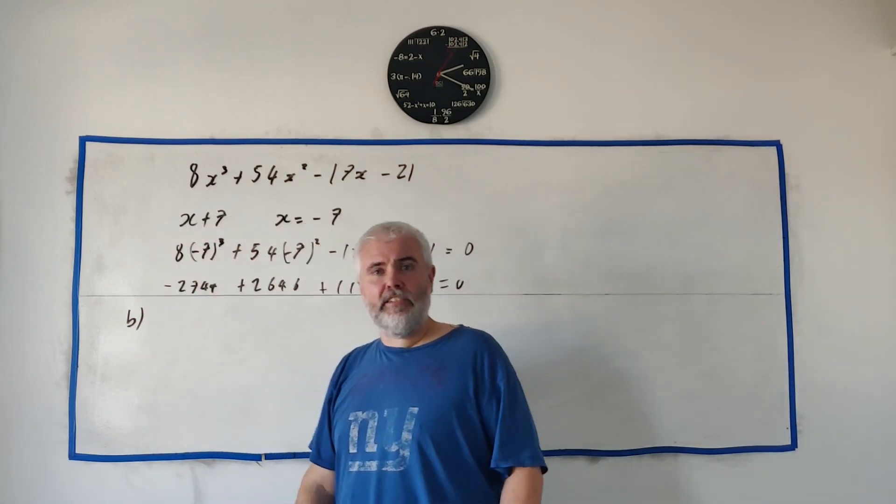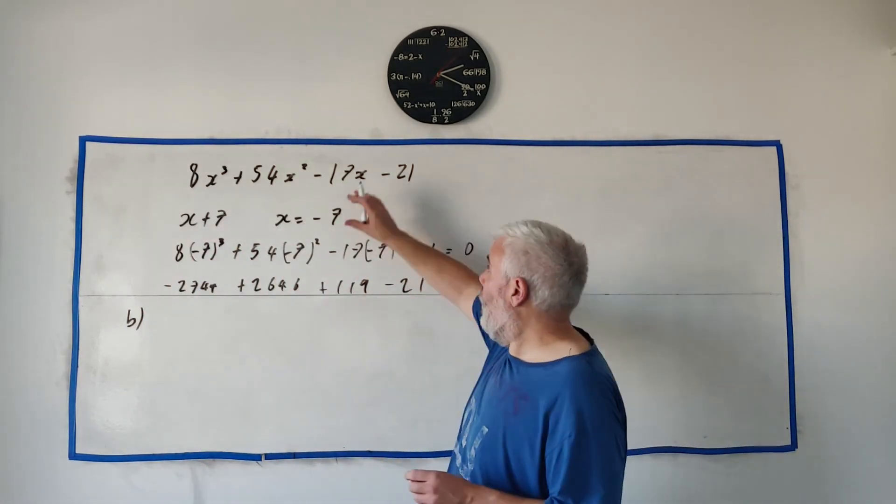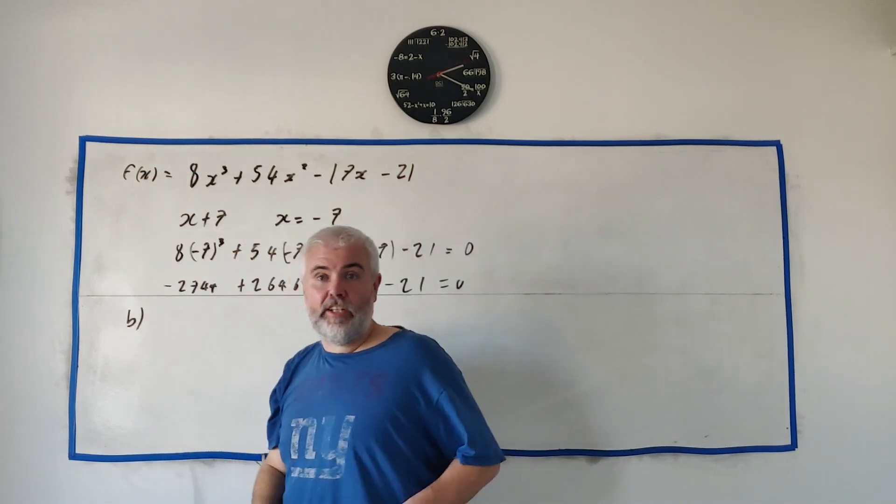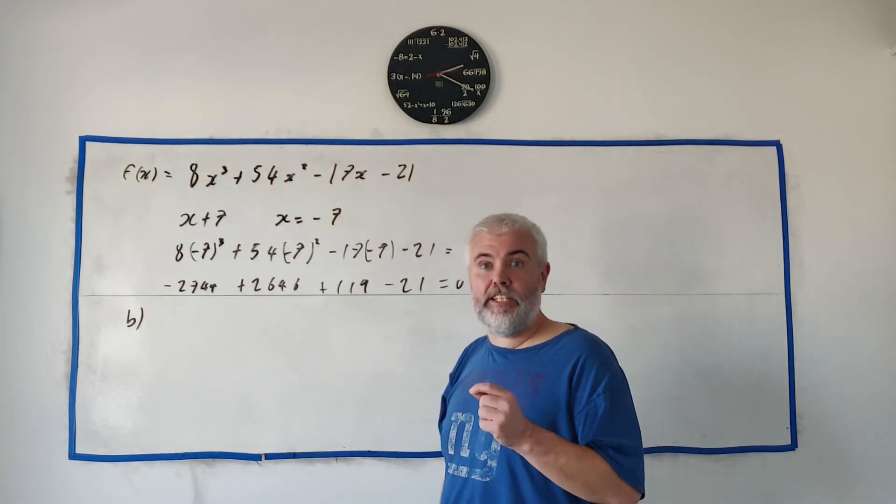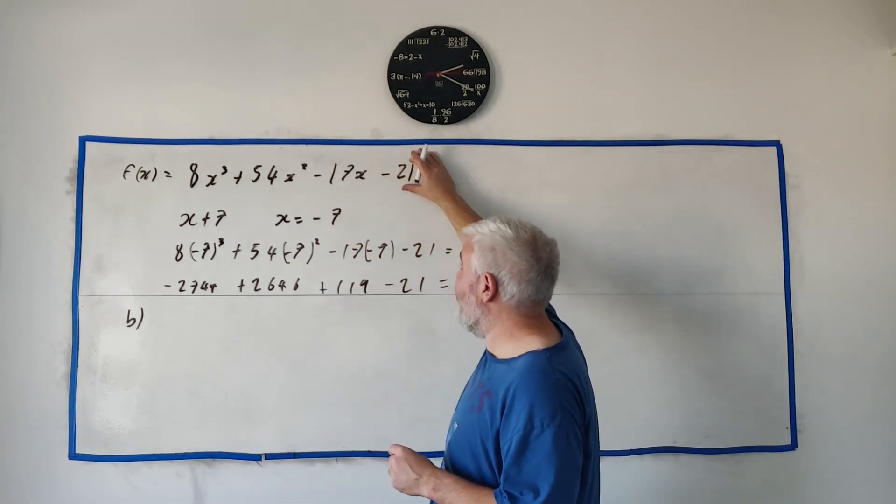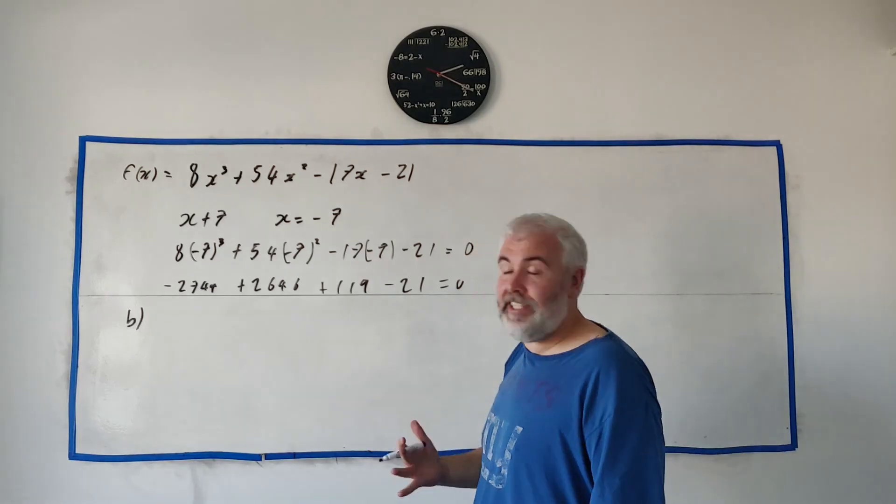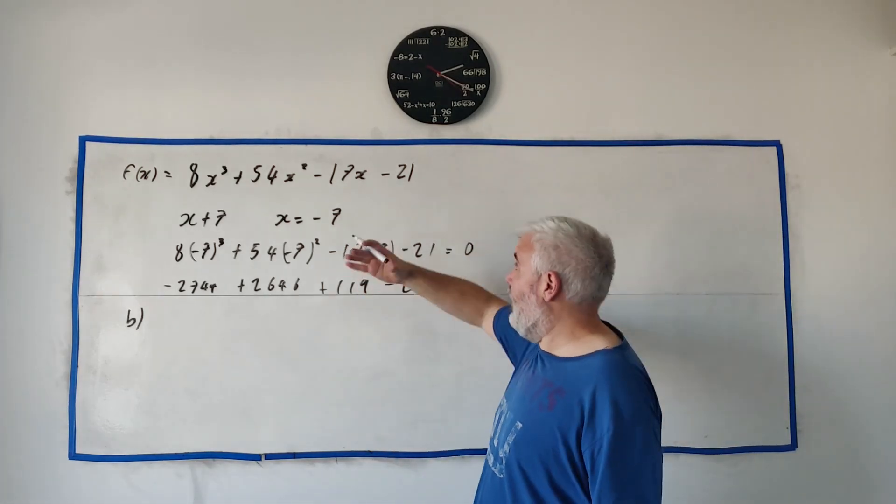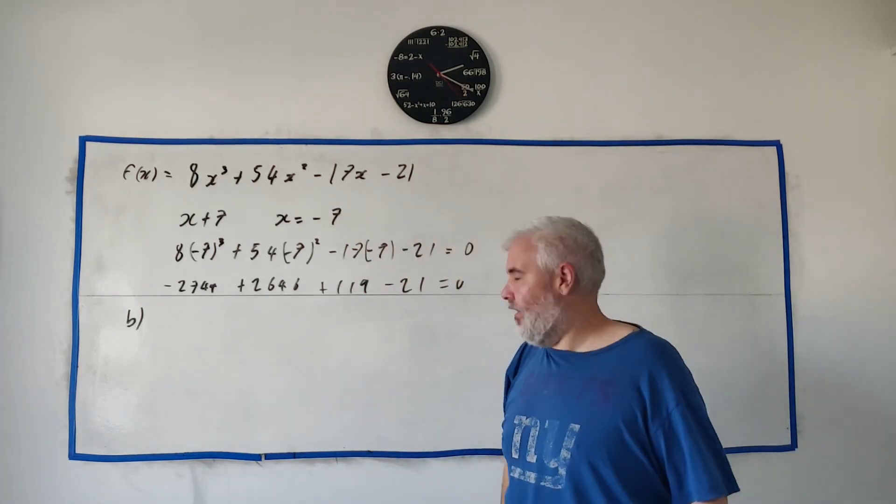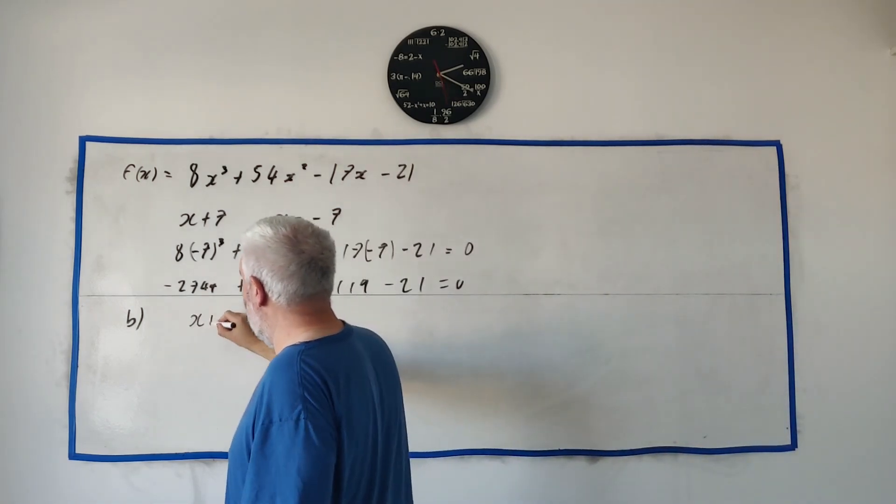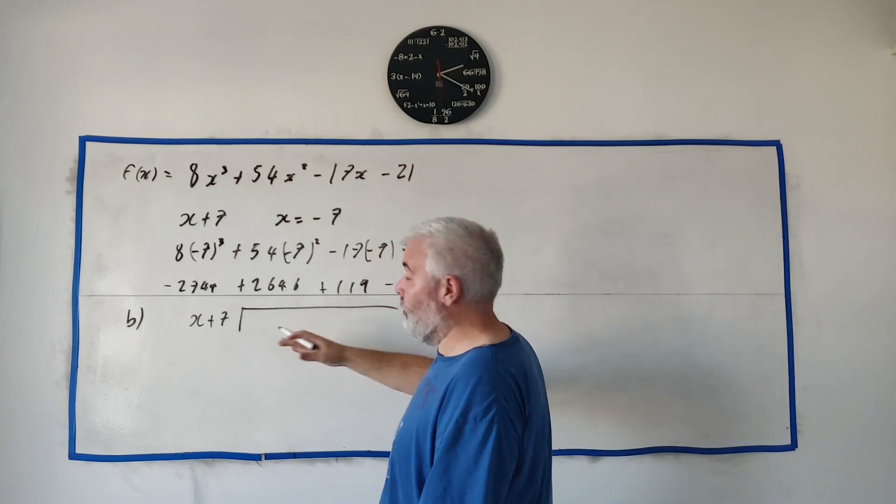In part B they ask us to find a quotient of f(x) this is f(x) up here the quotient of f(x) when it's divided by x plus 7 that means when this is divided by x plus 7 the answer is the quotient. That's a fancy way to say this divided by x plus 7 so really we need to divide this by x plus 7.